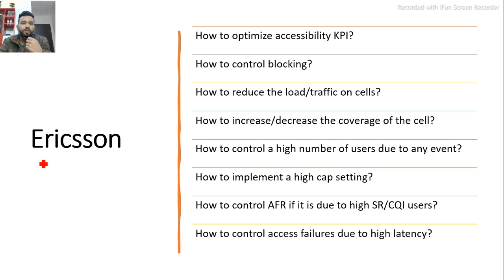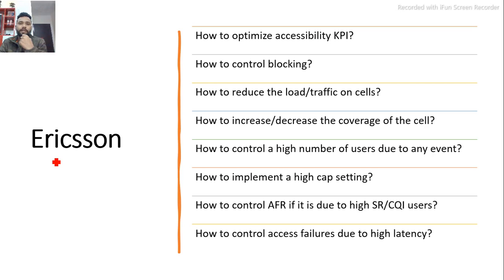Hello all, today I am going to discuss Ericsson 4G optimization at the parameter level. Let's say you are going to attend any interview and the interviewer asks you to tell some parameters which can help to improve the accessibility KPI. In this video I will discuss more than 15 parameters which can help to improve your accessibility KPI.